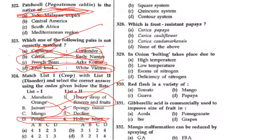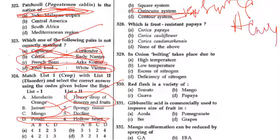Contour system होता है mountain hillaria में. Quincunx system में 15% ज्यादा plant accommodate होता है square system से — यह तो सभी को पता है. Quincunx नहीं, आप hexagonal system में याद रखेंगे — hexagonal/quincunx, just different types हैं. हम बाद में discuss करेंगे.